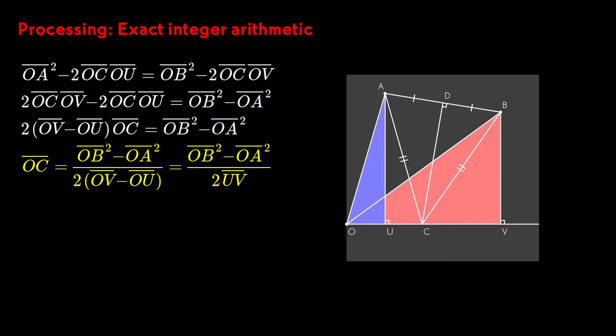This is a really elegant formula, because it allows for exact computation. There's no floating point required, no square root operations, just two subtractions and a division. Of course, we have to precompute the squares of OA and OB. Let me tidy up again and just keep the intersection formula.